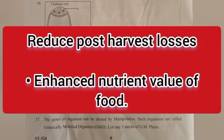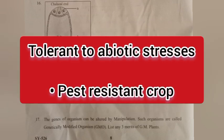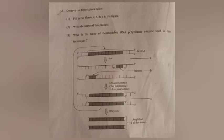Question 17: The genes of an organism can be altered by manipulation — such organisms are called genetically modified organisms. List any three merits of GM plants. Answer: 1) Reduce post-harvest losses. 2) Enhance nutrient value of food. 3) Tolerant to abiotic stresses. 4) Pest-resistant crops.